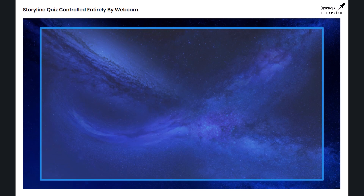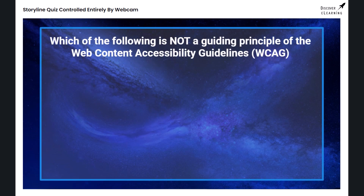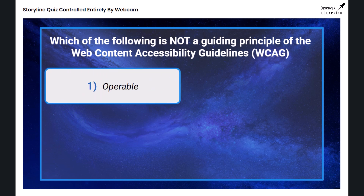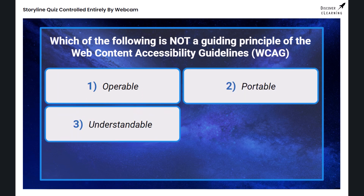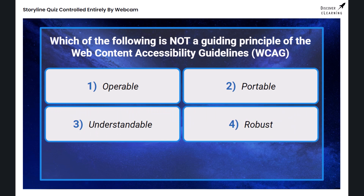Here's your next question. Which of the following is not one of the guiding principles of the Web Content Accessibility Guidelines, the WCAG? Is it option one, operable; option two, portable; option three, understandable; or option four, robust?